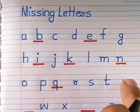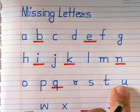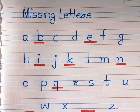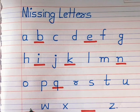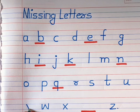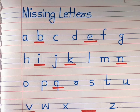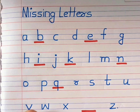T. Which alphabet is this? U. What comes after U and before W? Yes, V. U, V, W.